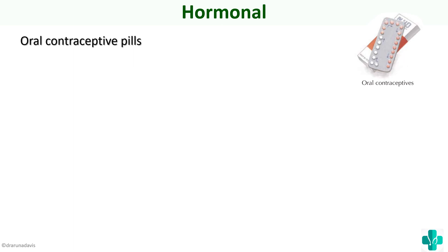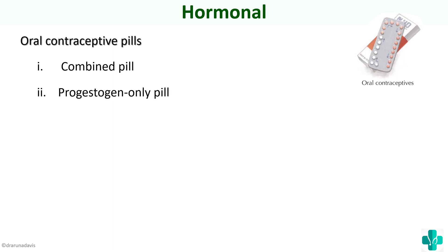When we say hormonal contraceptive pills, we generally mean the oral contraceptive pills or OCPs. They can be of many types, of which the major ones are: the combined pill, the progesterone-only pill, and the post-coital pill.